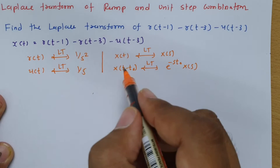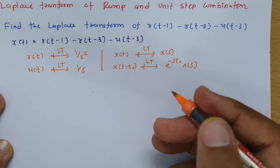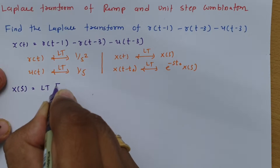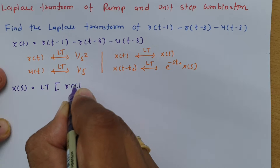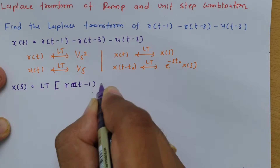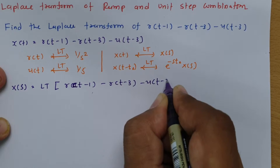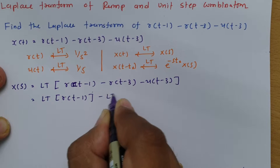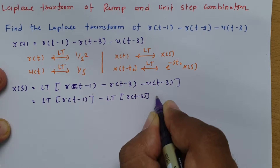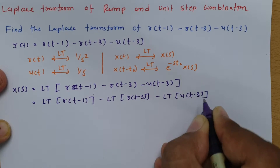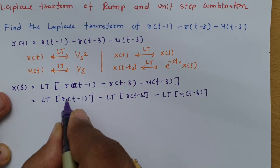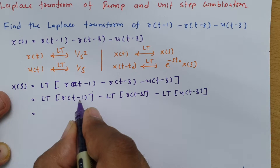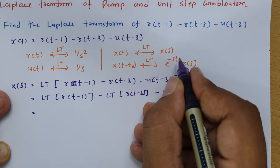Using these two formulas, we can solve the Laplace transform of this signal. Applying the linearity property, we can take a separate Laplace transform for each term. For r(t-1): r(t) has Laplace transform 1/s², and with a shift of 1, we multiply by e^(-s), giving e^(-s)/s².